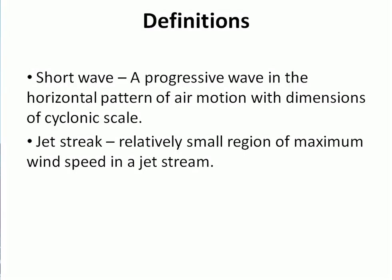The terms jet streak and shortwave are often intertwined when looking at these features in water vapor imagery. A shortwave is a progressive wave in the horizontal pattern of air motion with dimensions of cyclonic scale, typically associated with an area of lift due to PVA. A jet streak is a relatively small region of maximum wind speed in a jet stream, typically influencing the organization, initiation, and maintenance of storm systems. Jet streaks are associated with severe convection via their vertical motions and coupled ageostrophic flows.